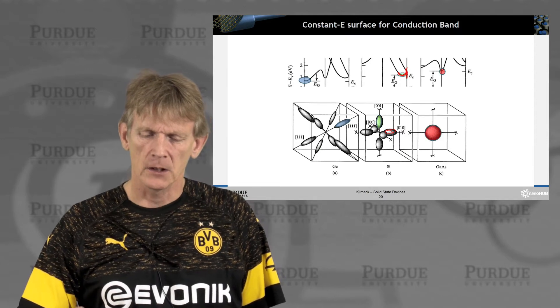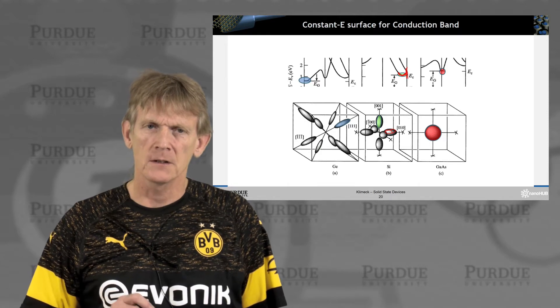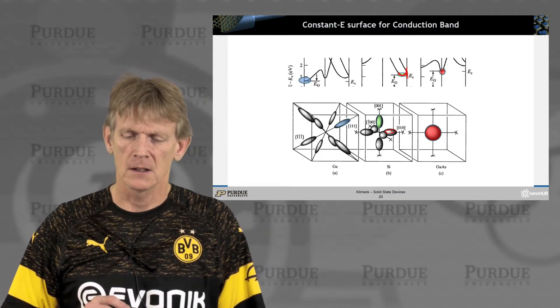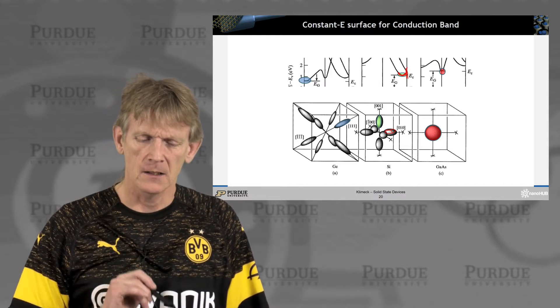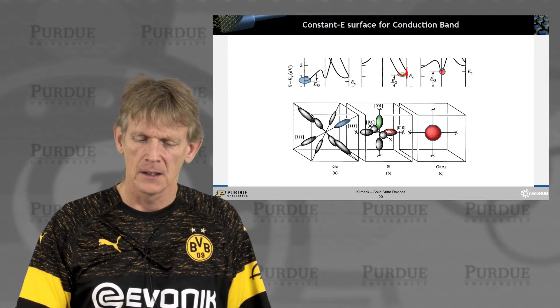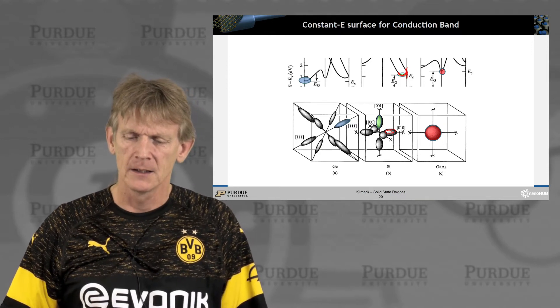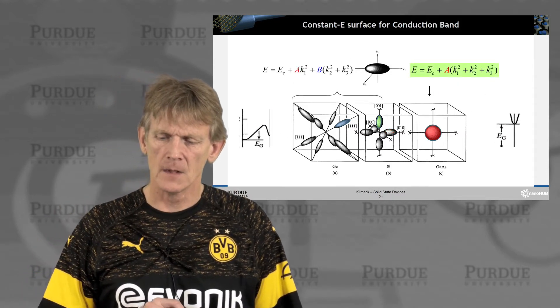So here we go. We have these equi-energy surfaces, constant dispersion surfaces. In germanium, you have eight of these valleys. In silicon, you have six in the conduction band. In gallium arsenide, you have one that's like a perfect sphere.